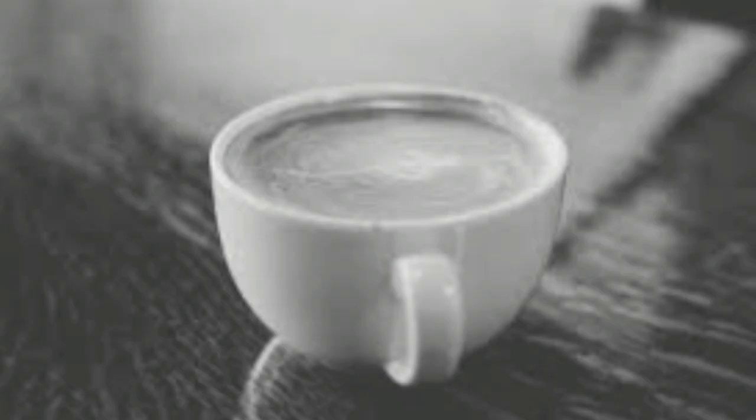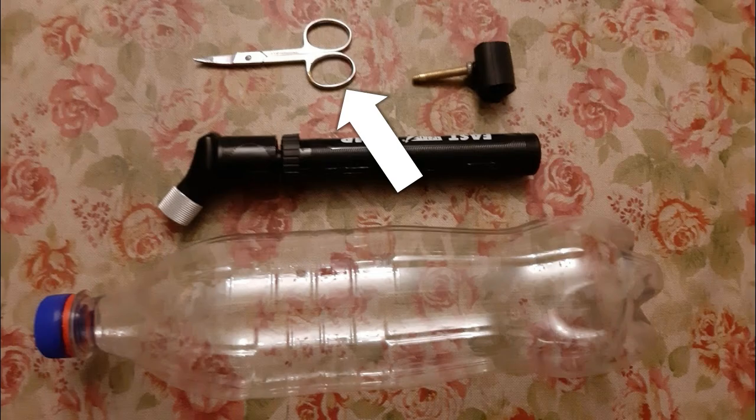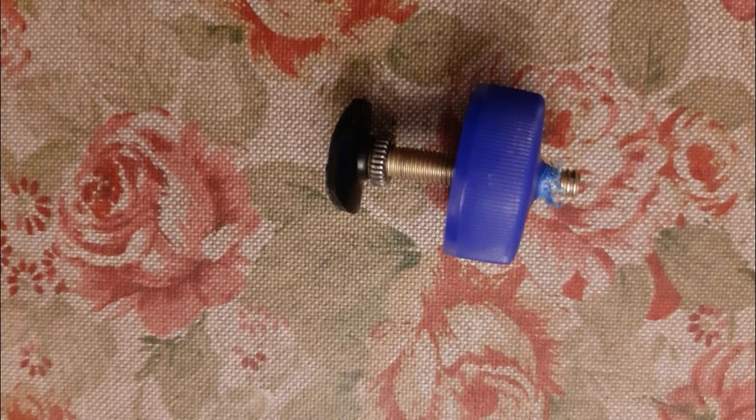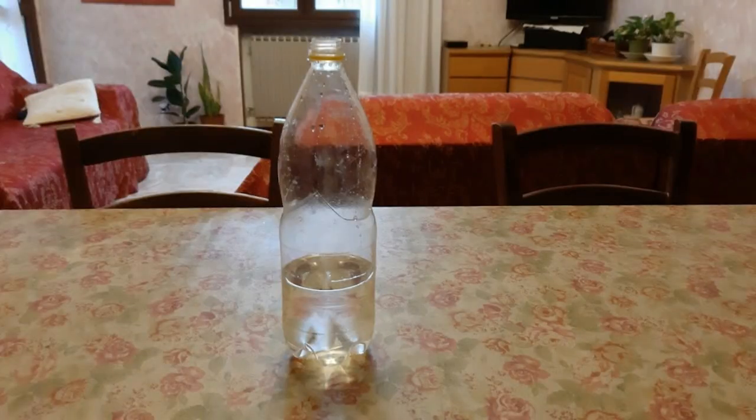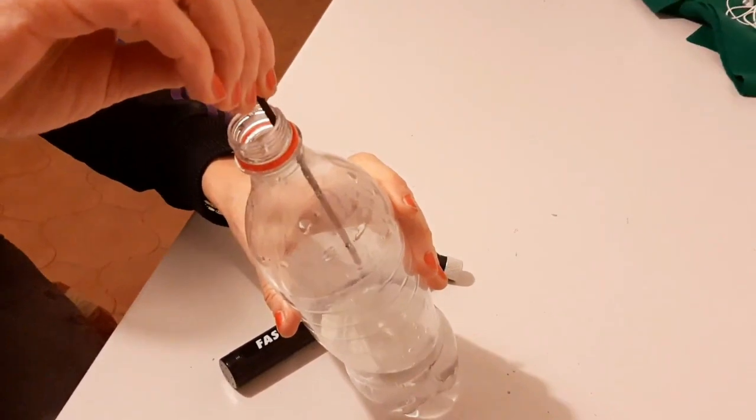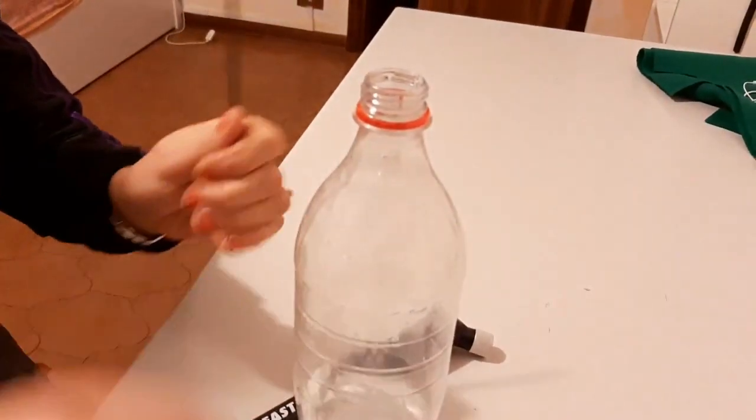Make a hole in the bottle cap with the nail scissors. Put the valve into the hole. Put some warm water in the plastic bottle. Light the incense stick and put some smoke in the bottle.